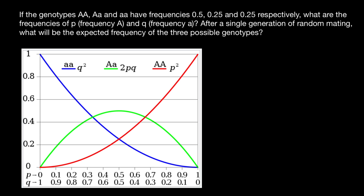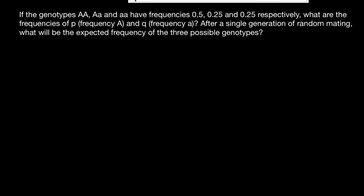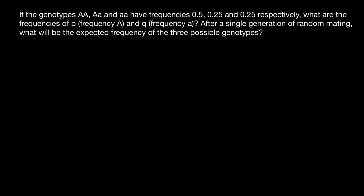Or maybe this population went through a bottleneck, meaning there has been a recent event such as some kind of natural disaster or disease. Our first step in order to solve this problem would be to find the frequency of the dominant allele and recessive allele.